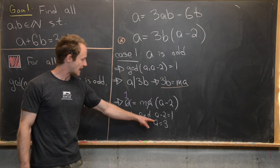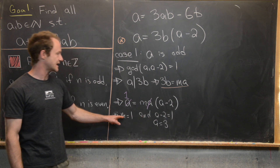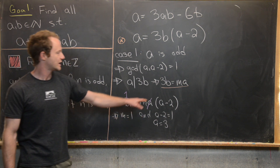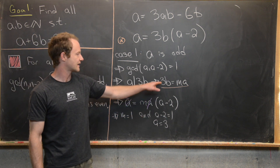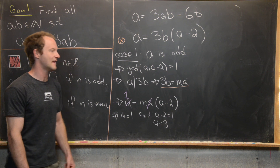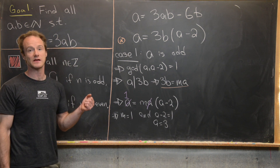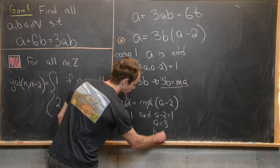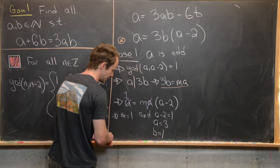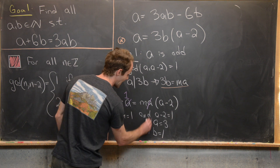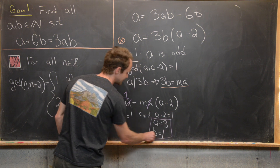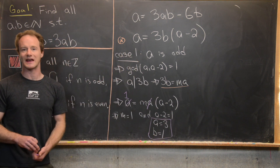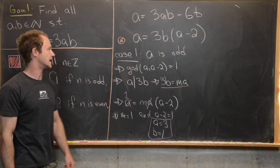Now with A equals 3 and M equals 1, we plug back into 3B equals M times A to get 3B equals 3, so B equals 1. That is our only solution under the assumption that A is odd.